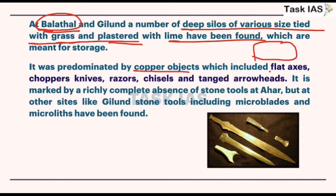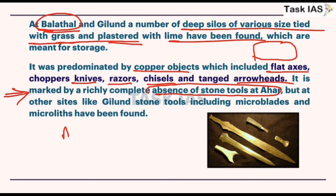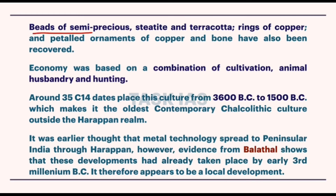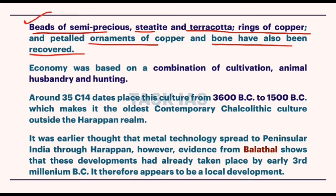The culture was predominated by copper objects including flat axes, choppers, knives, razors, chisels, and arrowheads. It is marked by a complete absence of stone tools at Ahar. This is an important point because at other sites like Gilund, stone tools including microblades and microlets have been found, which are characteristics of Mesolithic sites. Beads of semi-precious steatite, terracotta rings, copper petal ornaments, and bone objects have also been recovered.